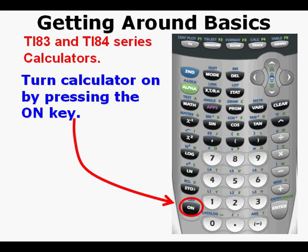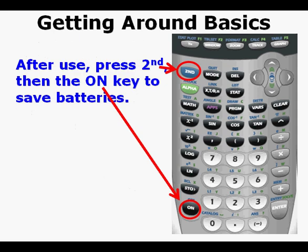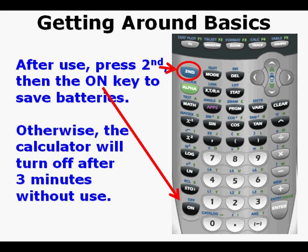Turn on the calculator by pressing the ON key at the lower left of the keypad. After finishing use, turn the calculator off by pressing the second key, then the ON key. This will save batteries. Otherwise, the calculator will turn itself off after three minutes without use.